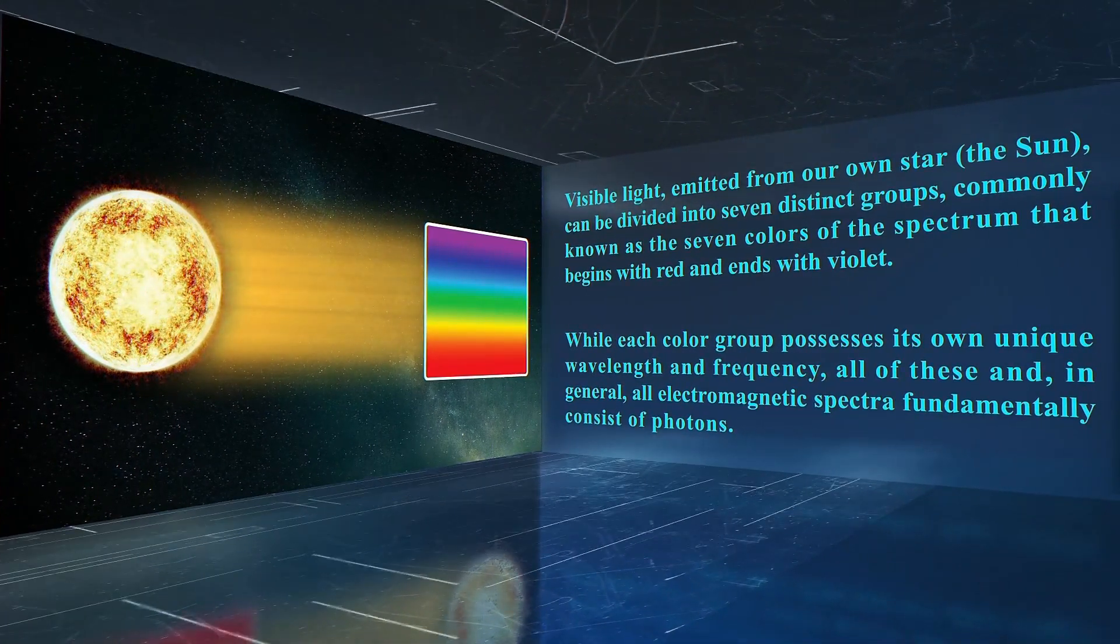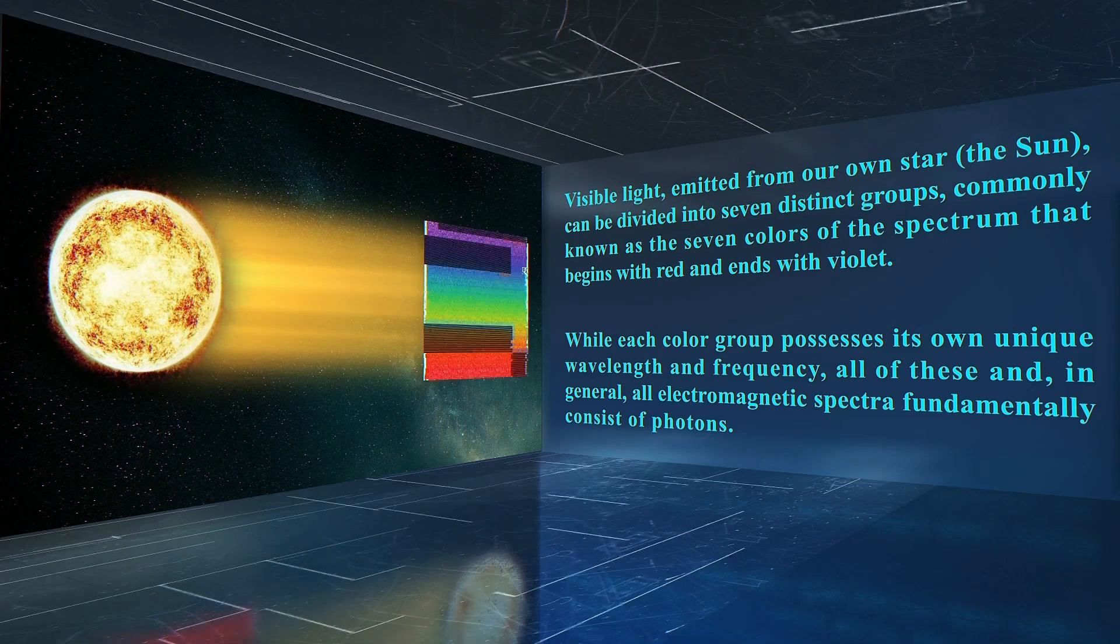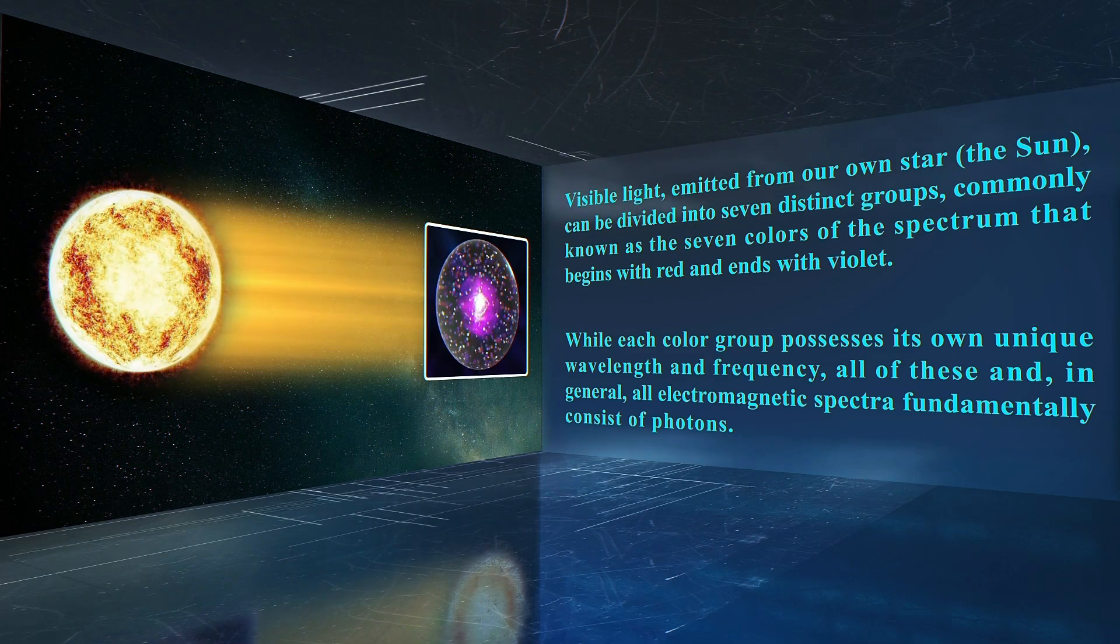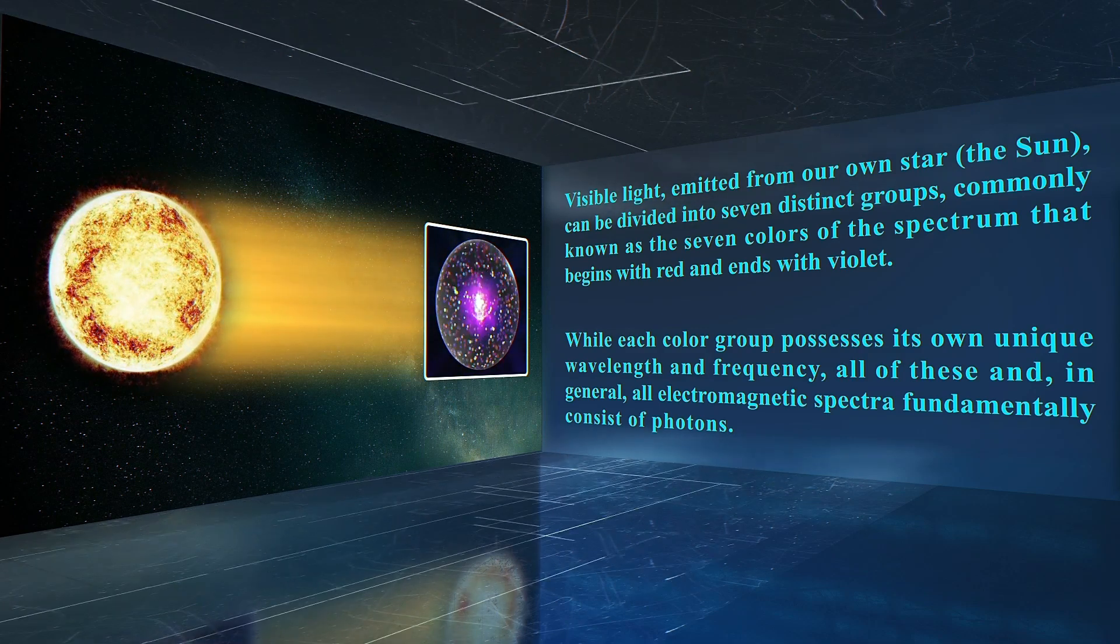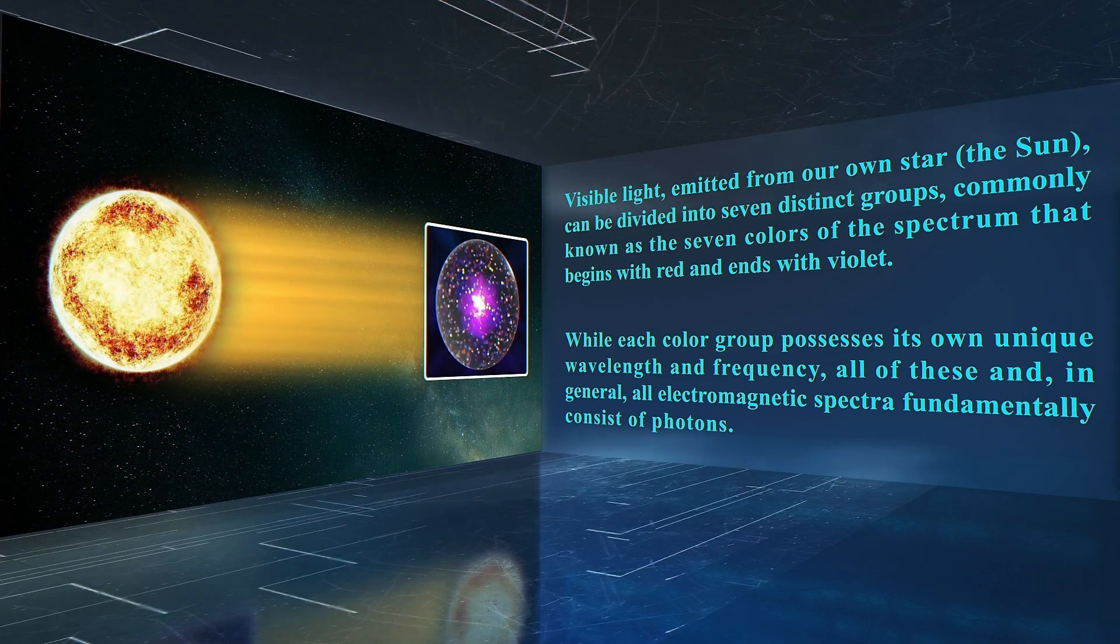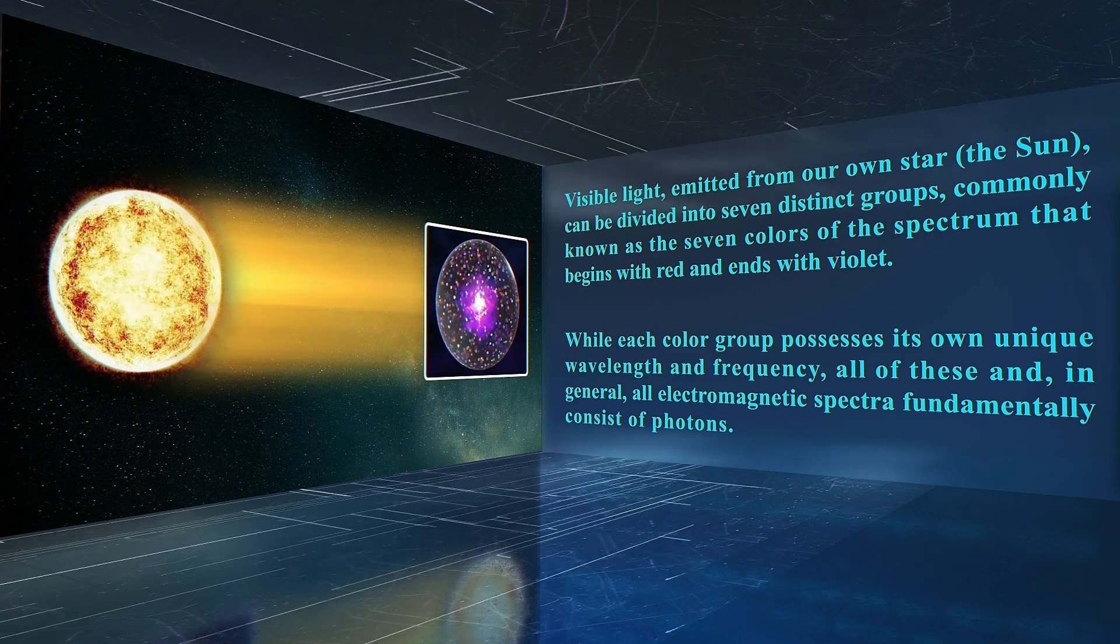Visible light emitted from our own star, the sun, can be divided into seven distinct groups, commonly known as the seven colors of the spectrum that begins with red and ends with violet. While each color group possesses its own unique wavelengths and frequency, all of these, and in general all electromagnetic spectra, fundamentally consist of photons.